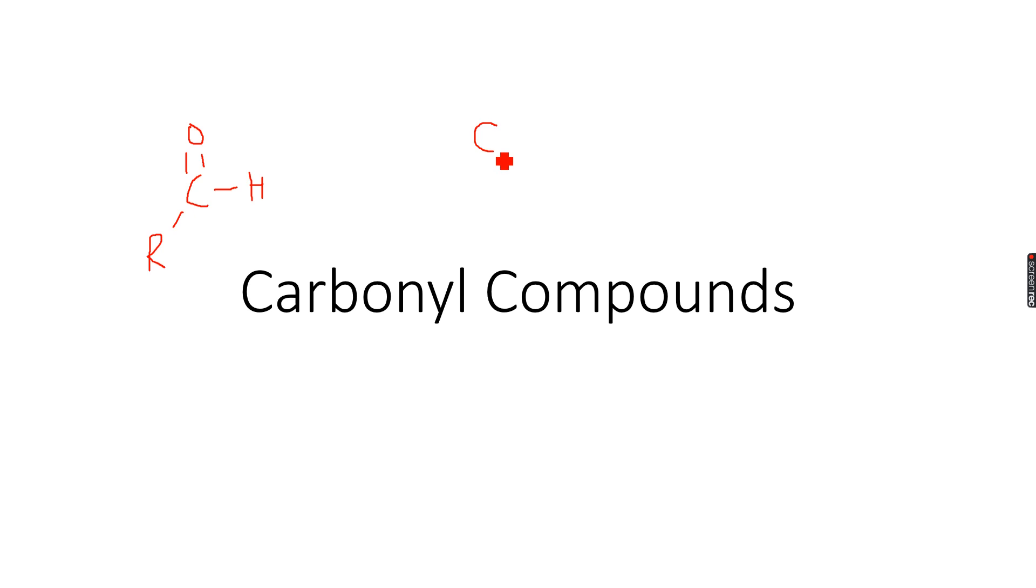In a ketone we have the carbonyl functional group but instead of a hydrogen atom we have an alkyl side chain and on the other side as well we have an alkyl side chain. This is the main difference between aldehydes and ketones.